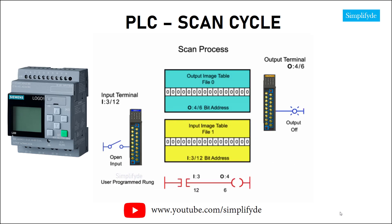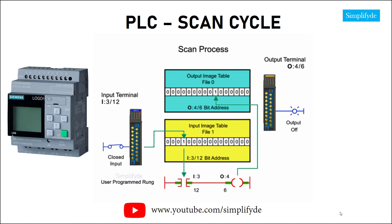The entire scan process is demonstrated further here. When the limit switch is activated, the input module detects a voltage and an ON condition is updated in the input table with a value of 1. During the execute program step, the PLC sets the input and output instructions ON.